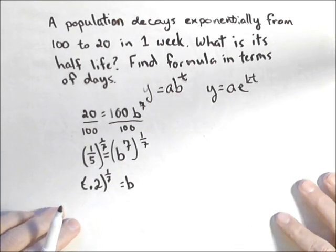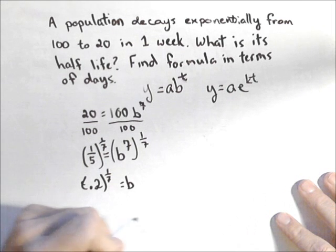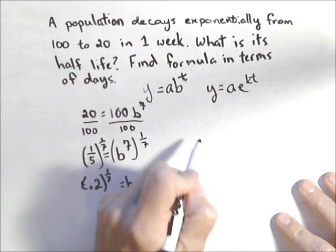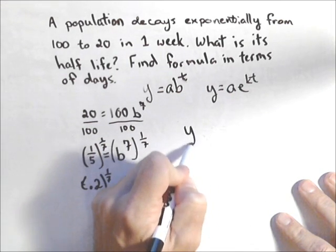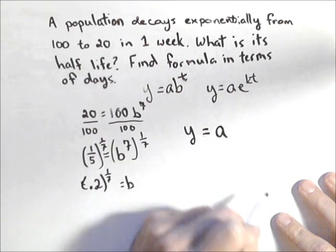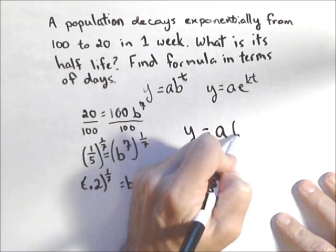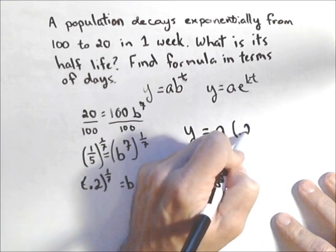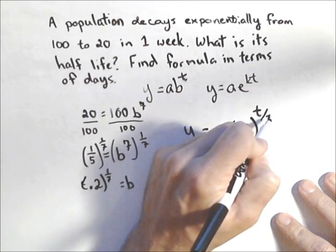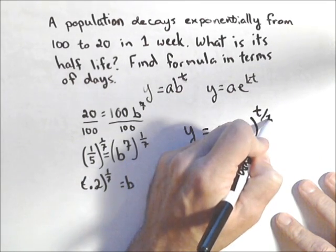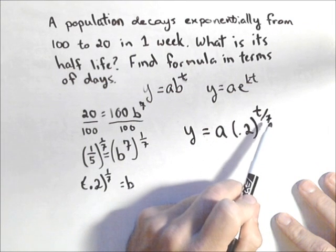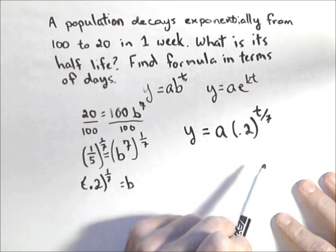Now that we know B, we know that our model is going to look like Y equals some initial amount times 0.2 to the T over seven, because we know it decays to 20% in seven days.